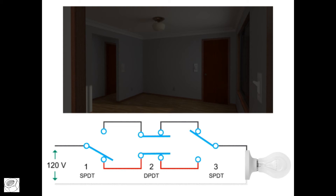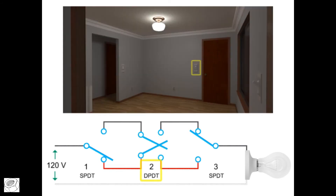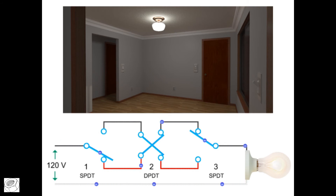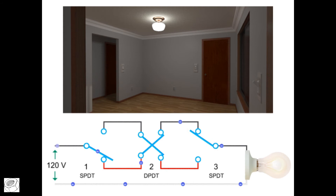If we keep switch one and three in the same positions and throw switch two into the crossover position, a complete connection is once again established and current flows through the red wire to the black wire to power the light bulb.